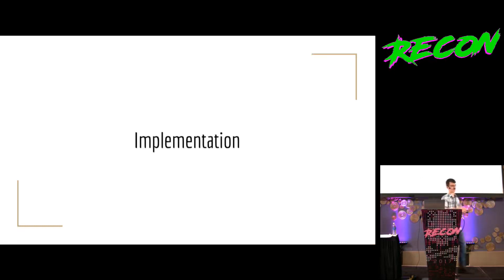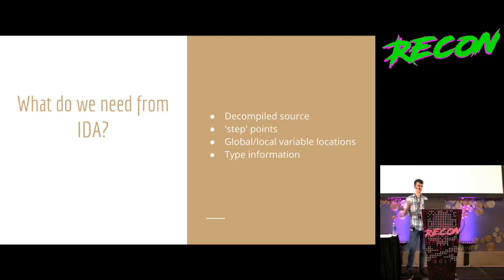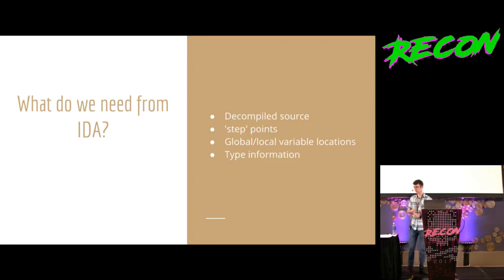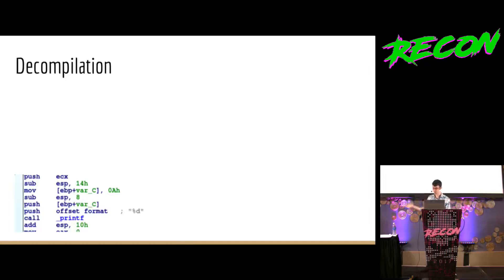I can say I can take debug info out of IDA and there's interesting stuff you can do with it, but let me tell you a little bit about how it works. For architectures where a decompiler exists, we need to pull out the decompiled source so we can get cool line numbers and step through things. We need to create an association between line numbers and addresses so we can step in semantically meaningful units. We need to pull out global and local variable locations, and we need to pull out type information so you can access members of structs and so on.